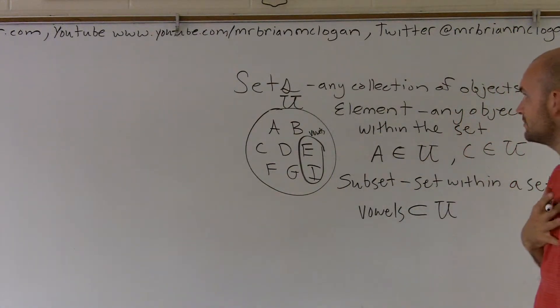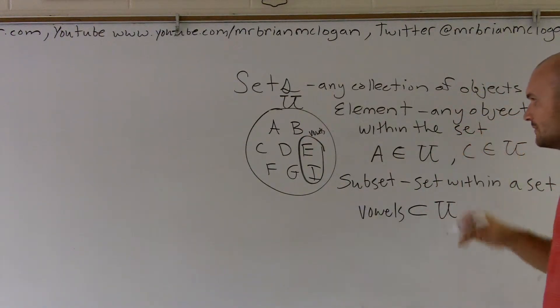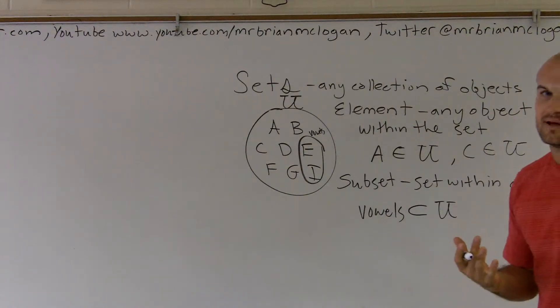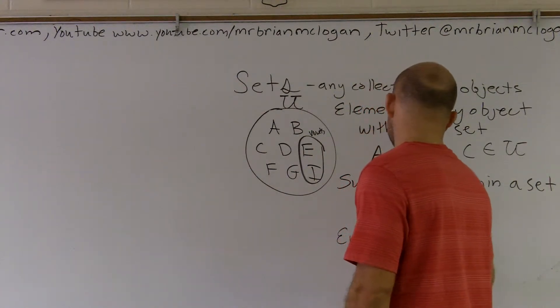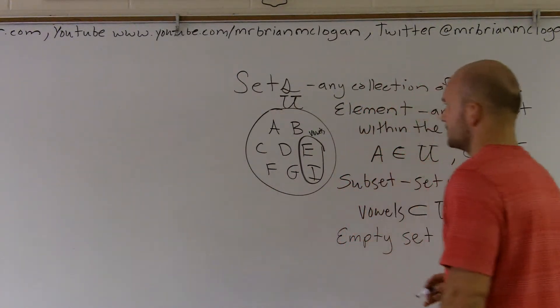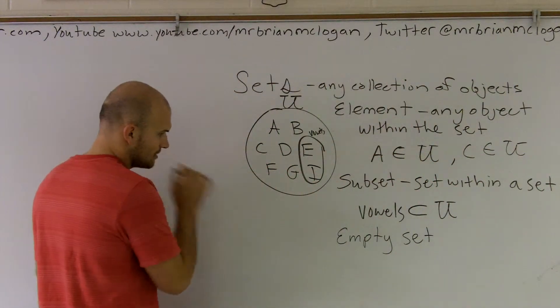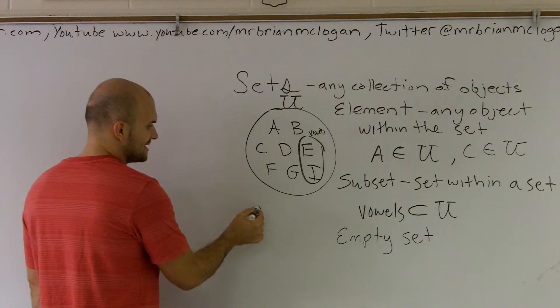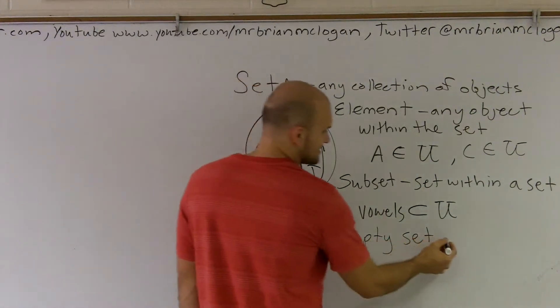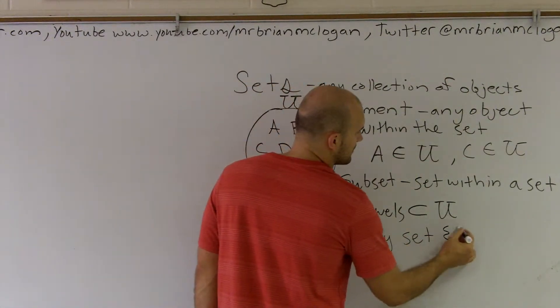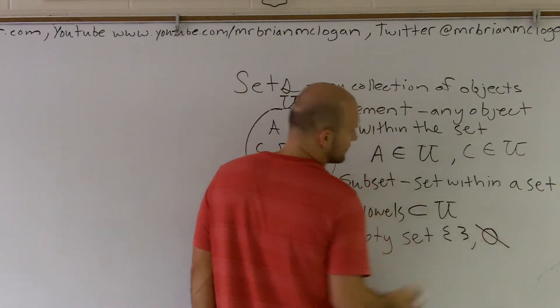A couple other things that we can work with is, let's say, if I had another set that was empty. So, that would just mean, let's say I make up another set and that set contains nothing in it. Well, then we have a couple of ways. And I'll give you actually an example of this in a second. So, our empty set, we write just pretty much two brackets with nothing in there, or write a zero with a cross through it.